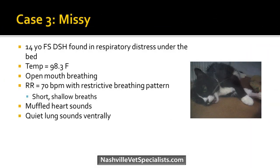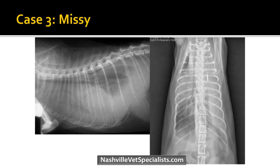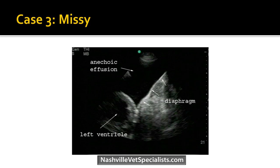The third case is Missy — a 14-year-old domestic shorthair found in respiratory distress under the bed. Temperature 98.3, open-mouth breathing, respiratory rate 70, and a restrictive breathing pattern of short shallow breaths. Heart sounds are muffled, and she has quiet lung sounds ventrally. Her chest x-rays show the cardiac silhouette is obscured and there are pleural fissure lines. Ultrasound shows the diaphragm, left ventricle, and fluid. She has pleural effusion, which is very common in cats.